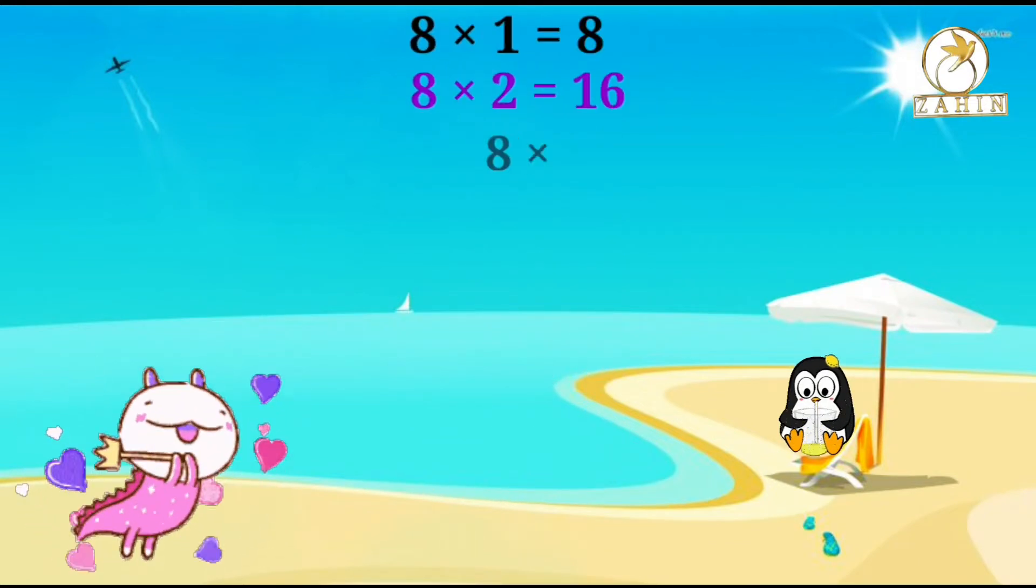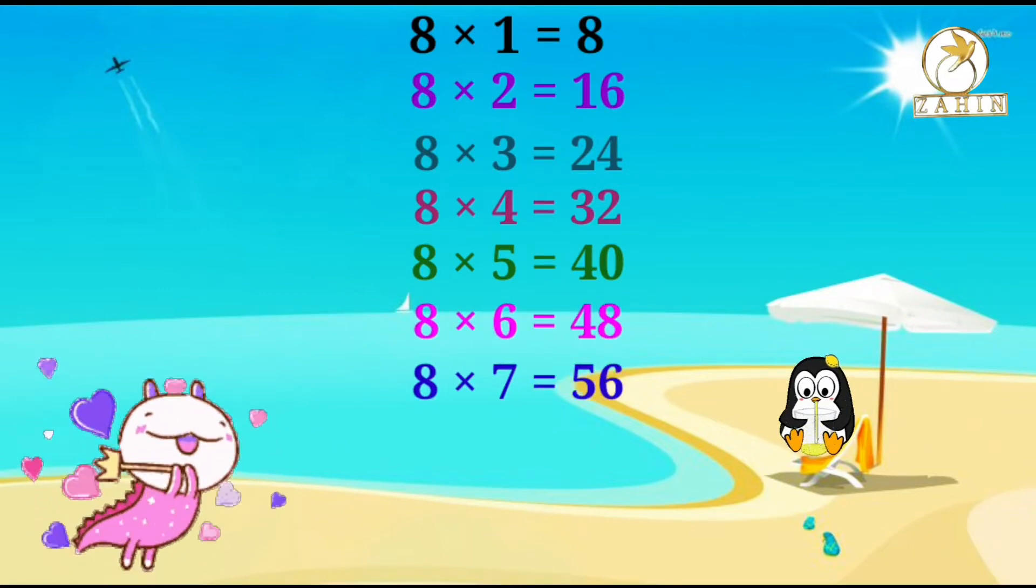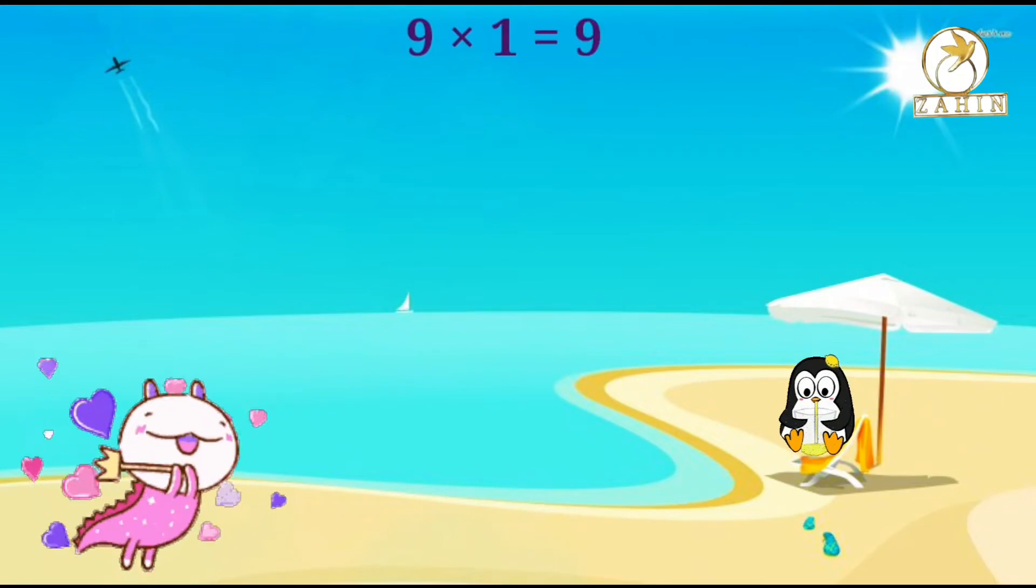8 times 2 equals 16, 8 times 3 equals 24, 8 times 4 equals 32, 8 times 5 equals 40, 8 times 6 equals 48, 8 times 7 equals 56, 8 times 8 equals 64, 8 times 9 equals 72, 8 times 10 equals 80. 9 times 1 equals 9.